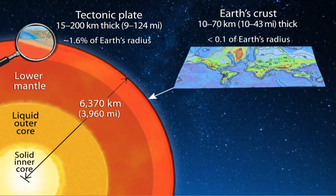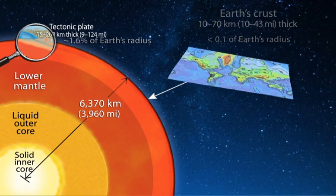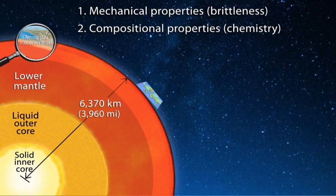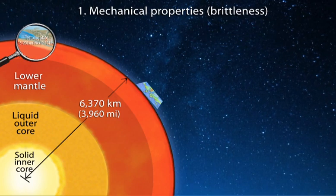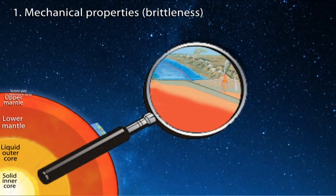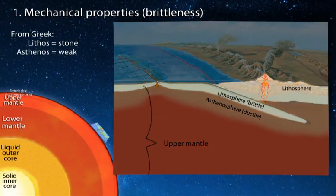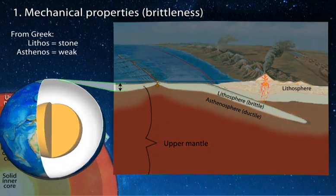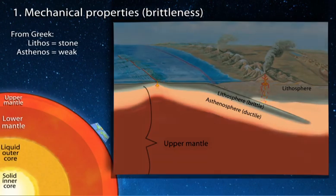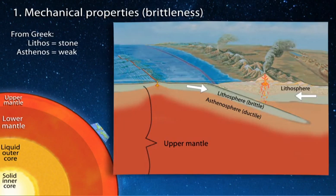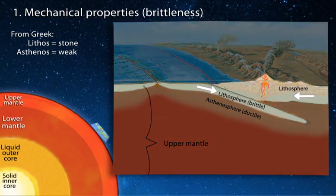Earth's outermost layers can be defined using two separate properties: mechanical or compositional. First, mechanical. Earth's 100 kilometer thick outermost rigid shell, called the lithosphere, is thin and brittle — analogous in its thickness like an eggshell relative to the Earth's diameter. The lithosphere is underlain by the asthenosphere, the weaker and hotter part of the upper mantle.